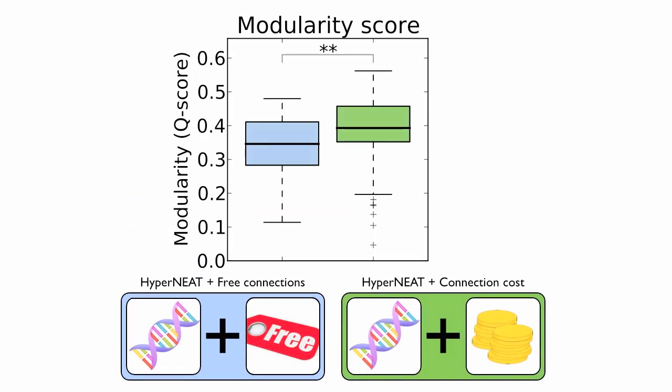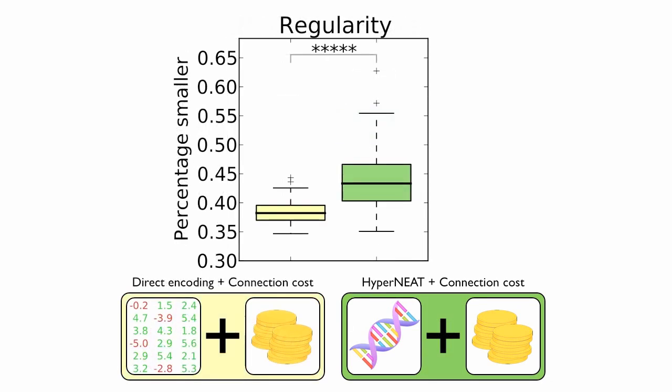In a direct comparison, HyperNEAT with connection cost is significantly more modular than HyperNEAT without connection cost. In another direct comparison, HyperNEAT with a connection cost is significantly more regular than a direct encoding with connection cost.